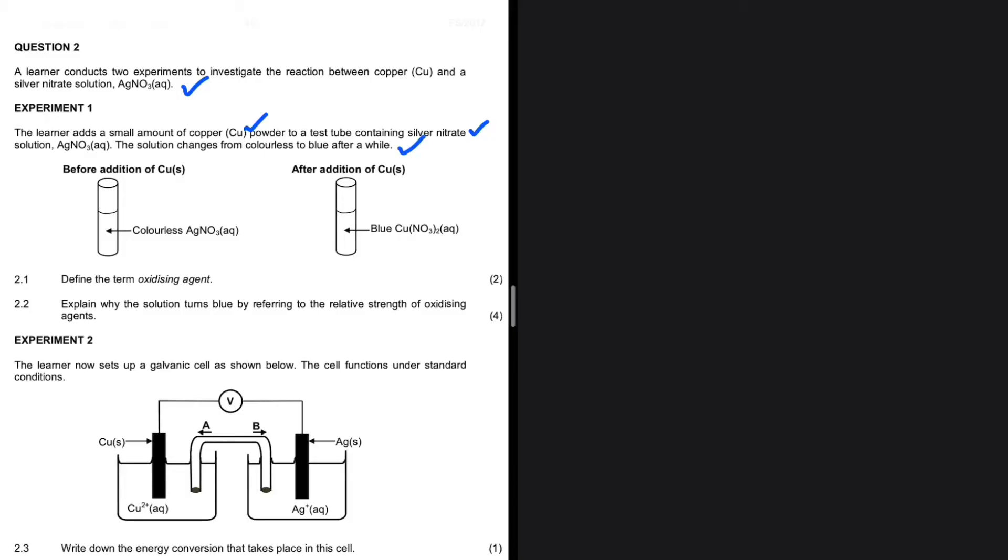The first question, 2.1, asks us to define the term oxidizing agent. The oxidizing agent undergoes reduction. Reduction is the gaining of electrons, so the oxidizing agent is the substance that gains electrons, or rather a substance that is being reduced. That is the answer to 2.1.